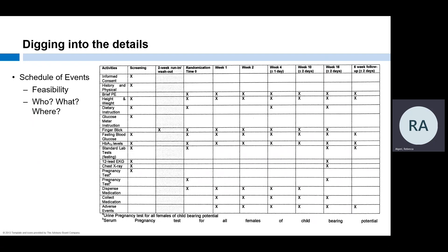The schedule of events provides key information about the timing of study visits and what must be completed at each. As you can see, this is generally presented as a table listing all activities in the first column and visits in the subsequent columns, with an X marking which visits will have each activity. Reviewing the schedule of events is an important element of protocol review when considering feasibility. Are visits spaced out enough for scheduling? Are there windows for each visit? Some visits may have windows and some may not, which will be important when scheduling subjects.